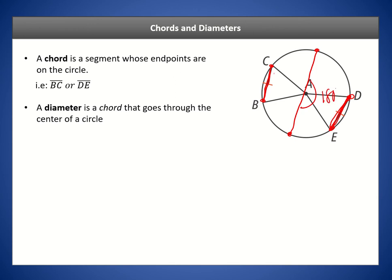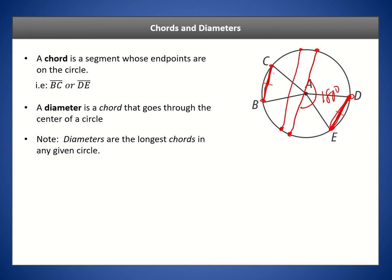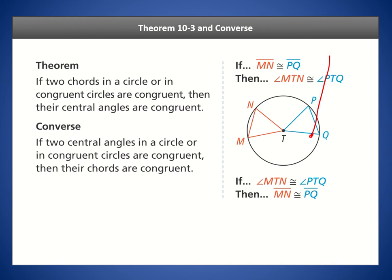A diameter cuts a circle in half, so each half is 180 degrees. Diameters are also the longest chords in any given circle — moving the chord left or right of center makes it shorter, so the one in the central position is the longest.